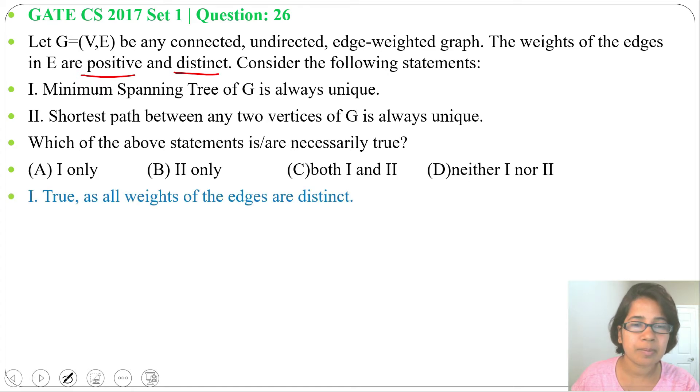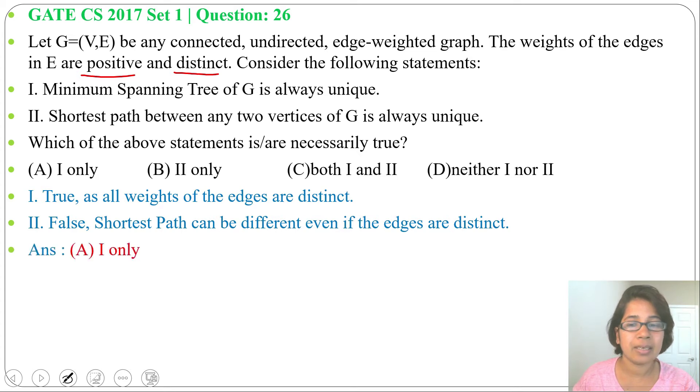Second statement, shortest path between any two vertices of G is always unique. This is false. Shortest path can be different even if the edges are distinct.